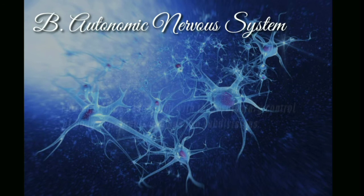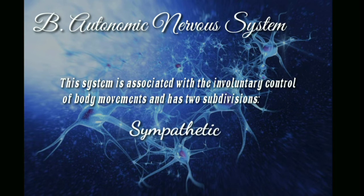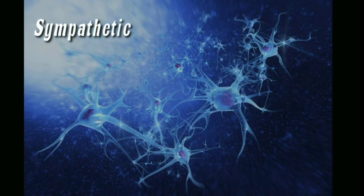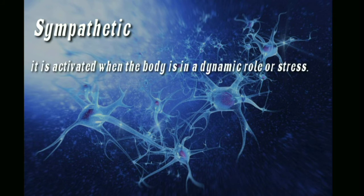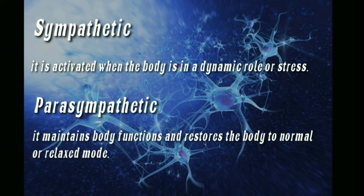The autonomic nervous system is associated with the involuntary control of body movement. It has two subdivisions: the sympathetic and the parasympathetic. The sympathetic is activated when the body is in a dynamic role or under stress. The parasympathetic maintains body functions and restores the body to a normal or relaxed state.